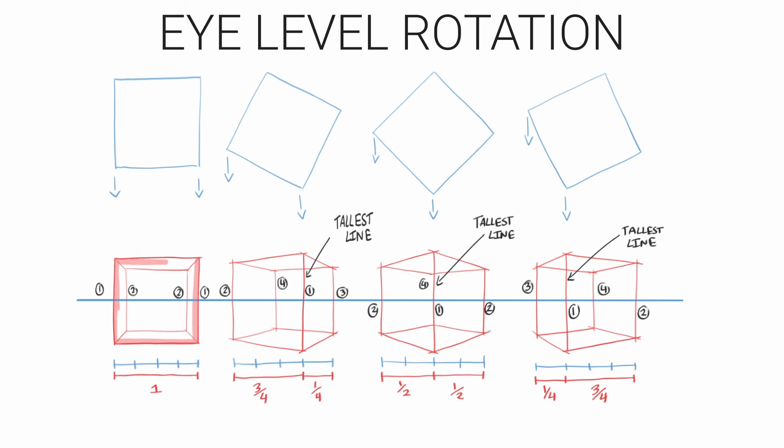Okay now remember when I was talking about how the boxes come closer to us as they rotate? You can account for this by making sure your lines change height. So here I've labeled the tallest line for each box and I've numbered the sides, the vertical sides from one to four with one being the tallest so you can see how this works. And also notice how the second and fourth boxes are mirror images of each other.